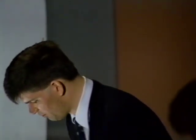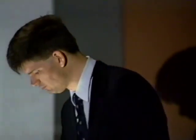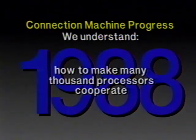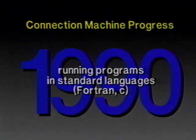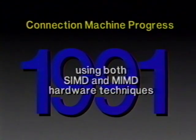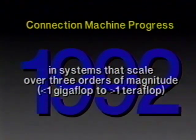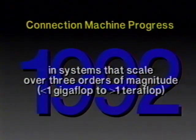We're hoping that this notion of scalable software will help complete the picture of portability and allow one to write a single application that will run on processors of different sizes, of different styles from different vendors. To summarize this company's progress in understanding parallel machine design: we understand how to make many thousands of processors cooperate — understood that back in 1988. We understood how to do it on real-world scientific and research applications the next year, running programs in standard languages based on Fortran and C, using both SIMD and MIMD hardware techniques. We can do this in systems that scale over three orders of magnitude, from less than a gigaflop to more than a teraflop.